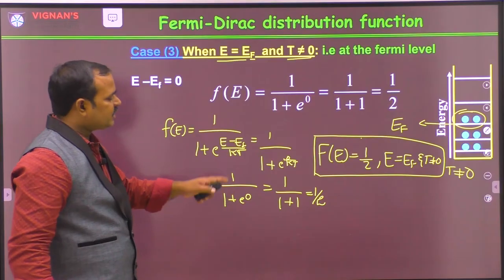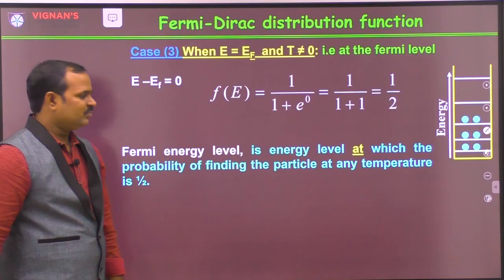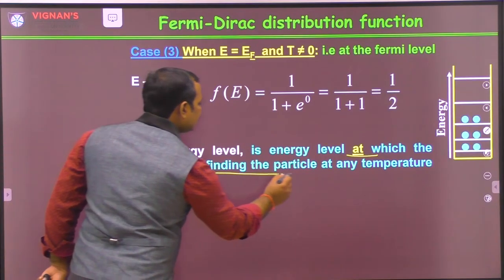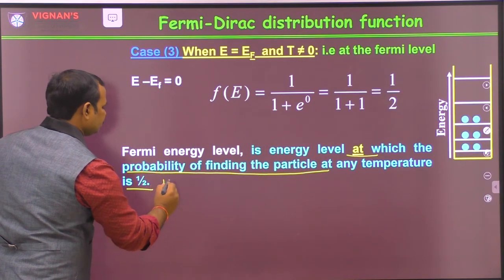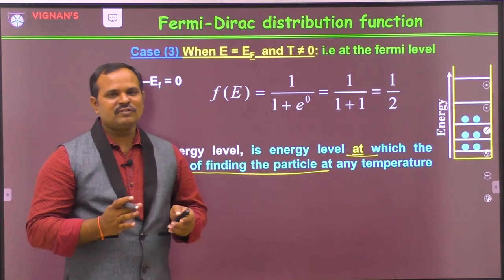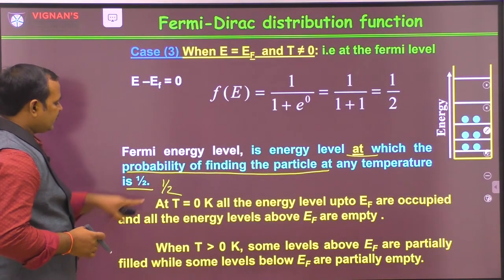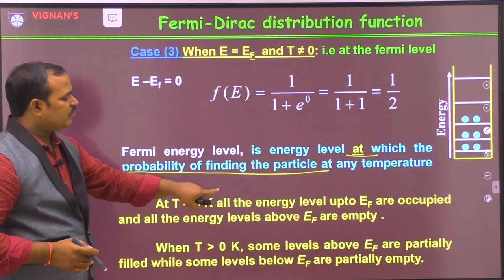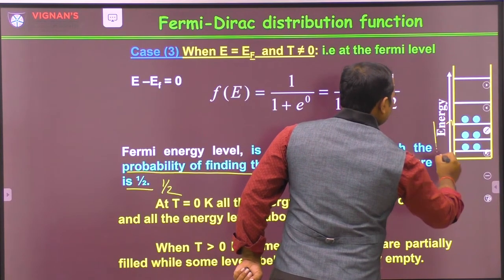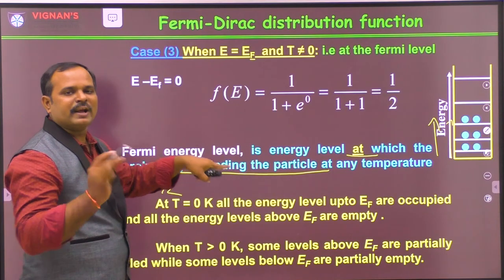From this third condition, we can also define the Fermi level: the Fermi level is the energy level at which the probability of finding the particle is 1/2 at any non-zero temperature. The Fermi energy level has many definitions and every definition is correct. At T = 0 Kelvin, all levels up to EF are occupied, and all energy levels above EF are empty.